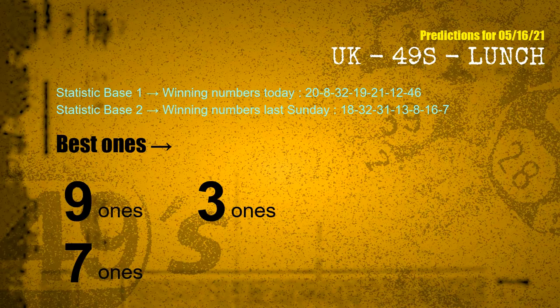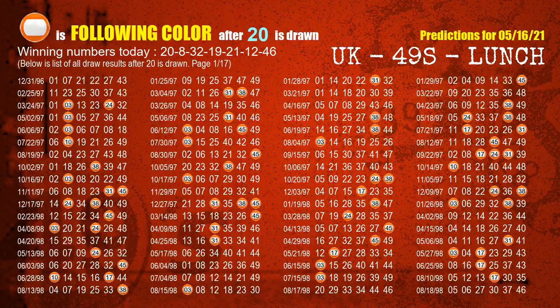According to the statistics above, with winning numbers today 20, 08, 32, 19, 21, 12, 46, and winning numbers last Sunday 18, 32, 31, 13, 08, 16, 07 — the frequent following ones are 9 ones, 3 ones, and 7 ones. Besides following ones, we need more clues for winning numbers of next draw, so we will find out the most drawn ball color through today's result.